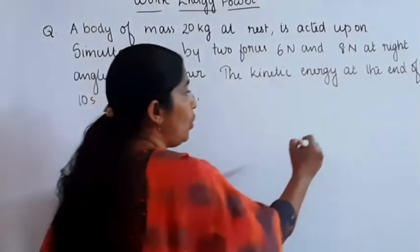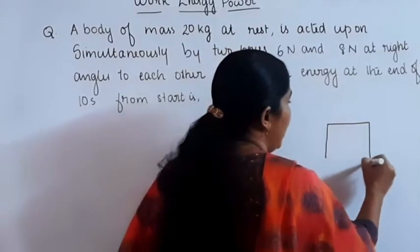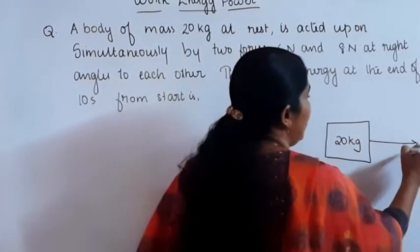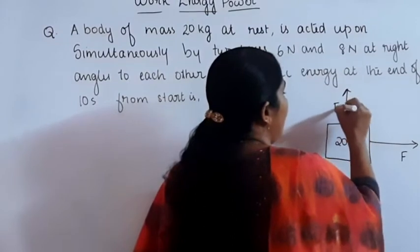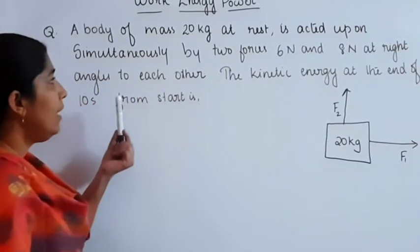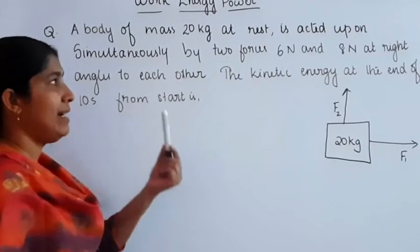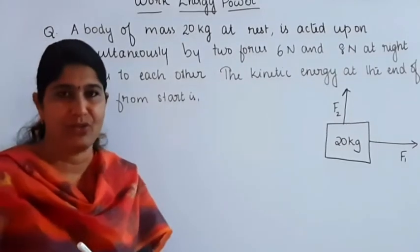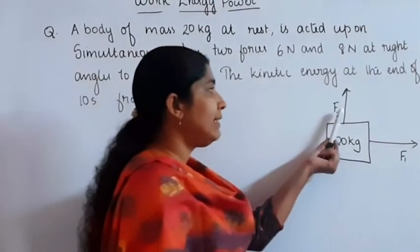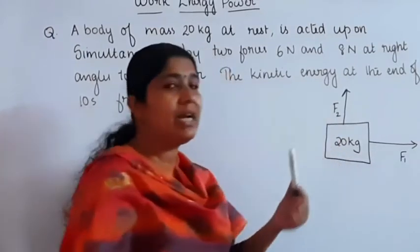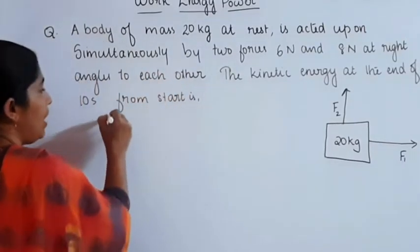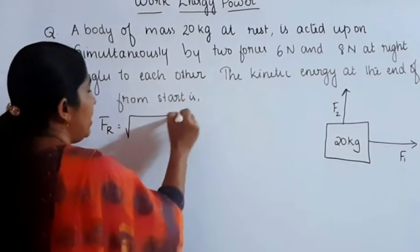Two forces are acting on a 20 kg body, and these two forces F1 and F2 are at right angles to each other. Then the kinetic energy at the end of 10 seconds is to be found. From the given data, we can find out the resultant of these two forces. Since the forces are acting at right angles, the resultant force FR is equal to the square root of F1² plus F2².